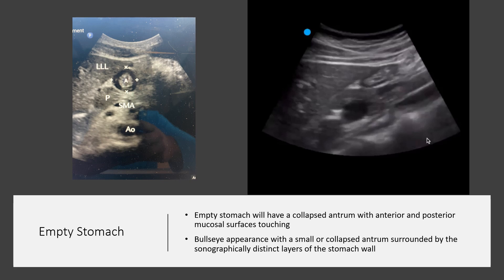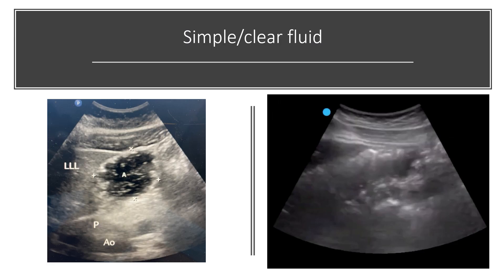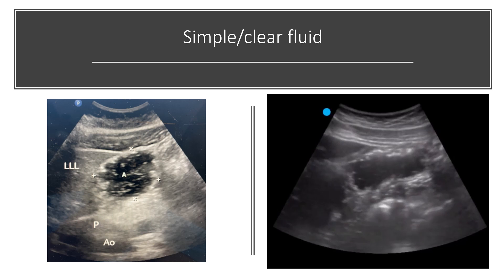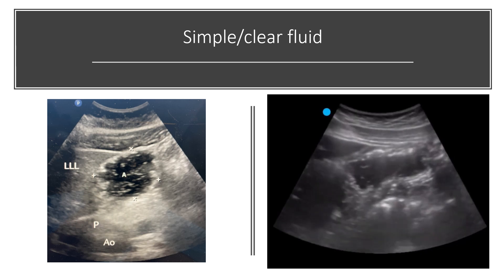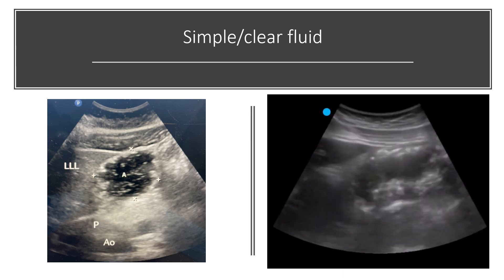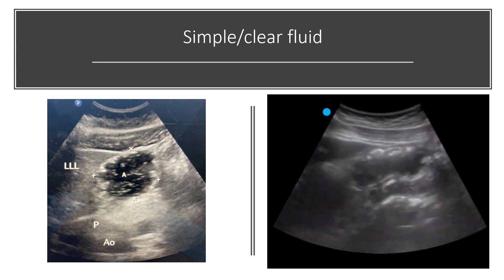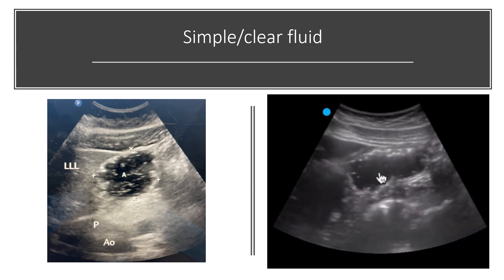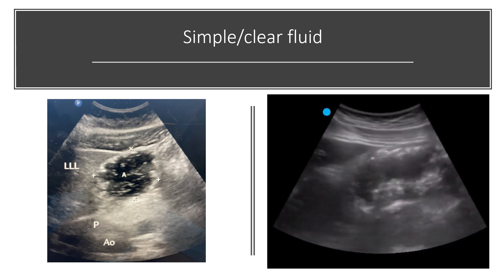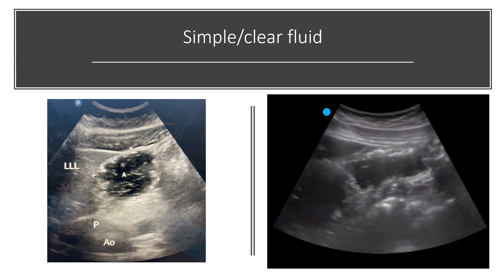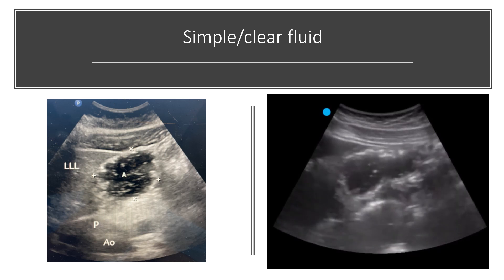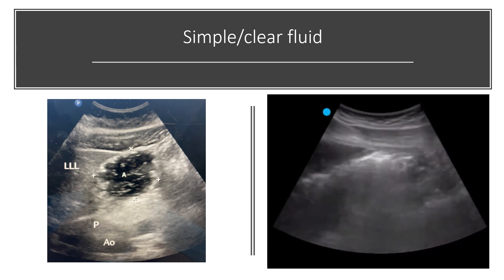Simple or clear fluid appears hypoechoic and the antrum is enlarged. You may also notice hyperechoic material in the fluid — this is called the starry sky appearance and can be seen in patients who just drank a carbonated beverage. The presence of clear liquids should be followed by measuring the antral cross-sectional area in the right lateral decubitus position to estimate gastric volume.